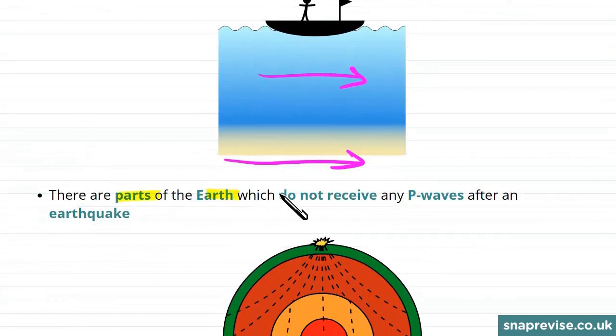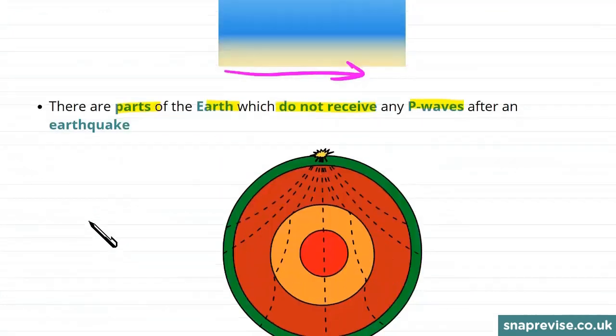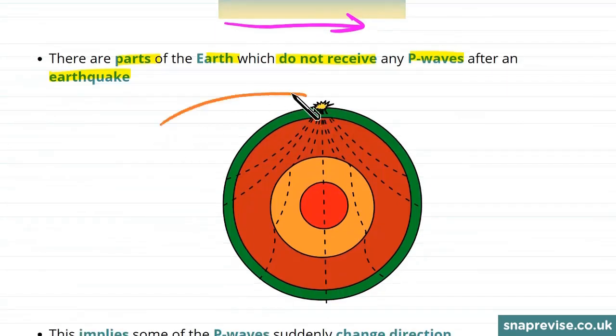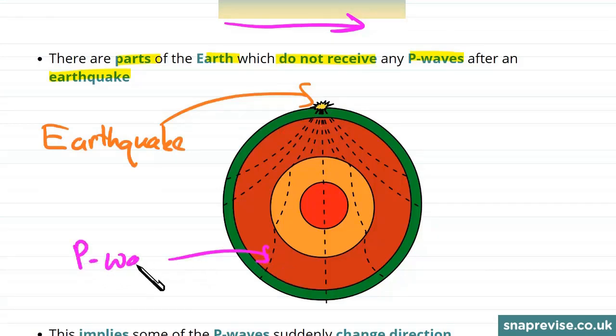Now there are parts of the Earth which do not receive any P-waves after an earthquake. So we set off this earthquake here and we're using these dotted lines to represent our P-waves which are passing through the Earth.